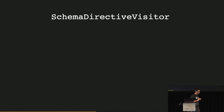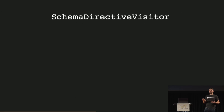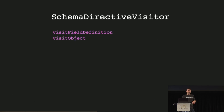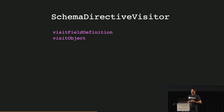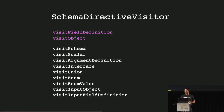With Apollo, we get this class called SchemaDirectiveVisitor. The idea is that our schemas are made up of lots of different parts, and when we're creating directives, it won't always be the case that every part of our schema should be affected by a directive. So we get this SchemaDirectiveVisitor class that has methods to visit various parts of the schema. The two you'll probably use most often are visitFieldDefinition and visitObject. But we've also got visitScalar, visitEnum, and anything else that goes into constructing a schema.